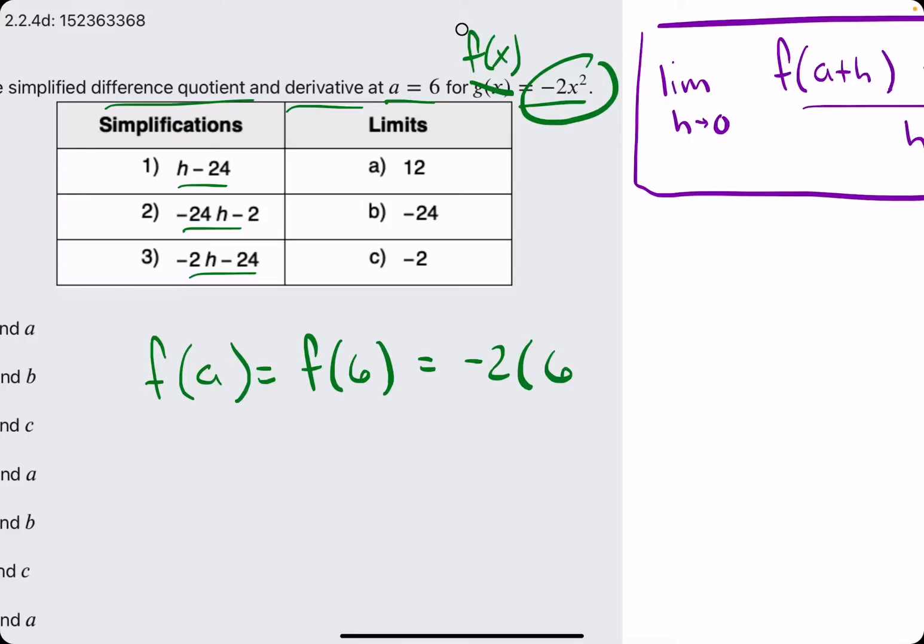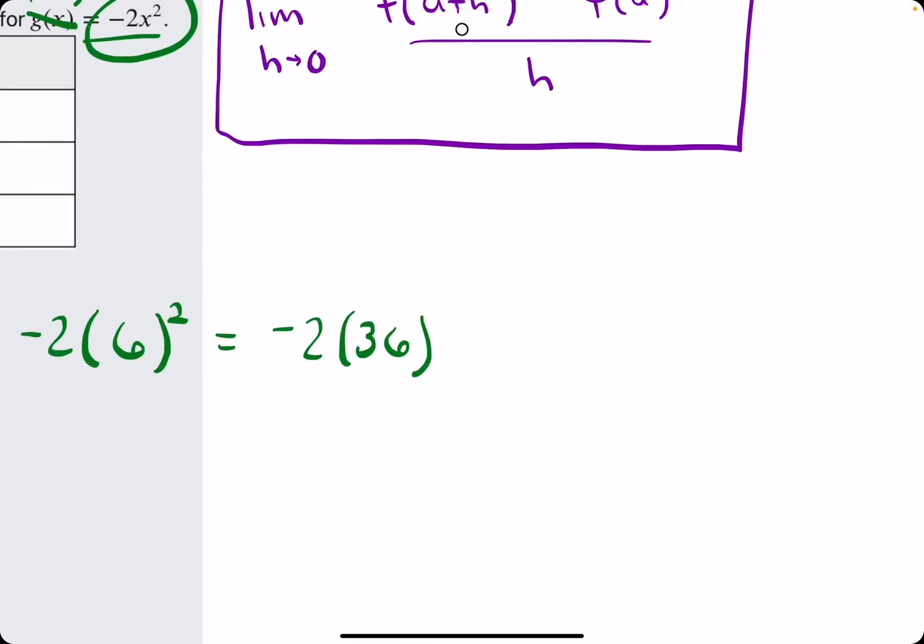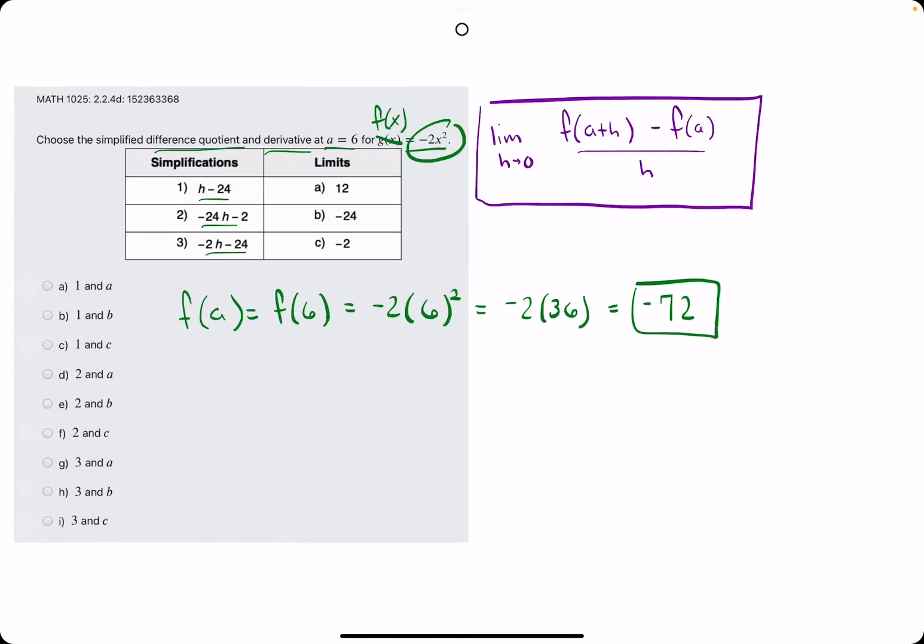So negative 2 times 6 squared. 6 squared is 36. So negative 2 times 36 is negative 72. So f of a is negative 72.